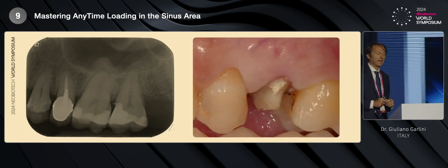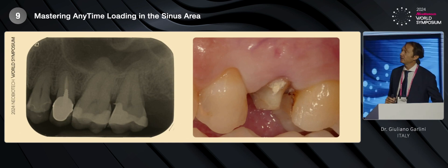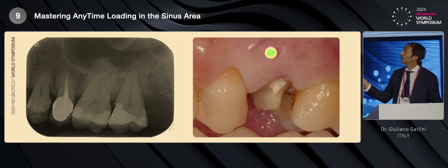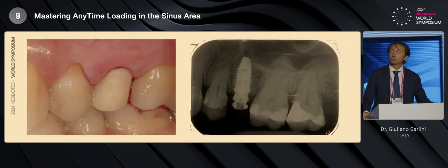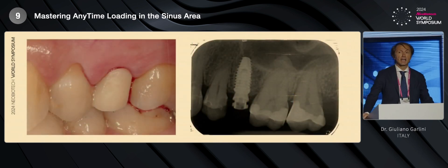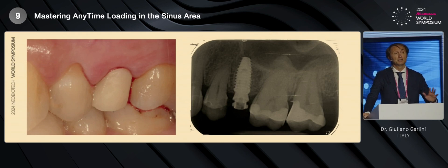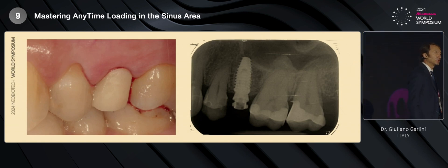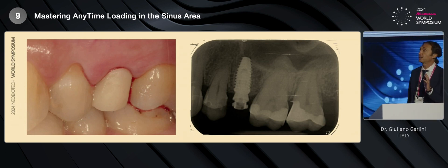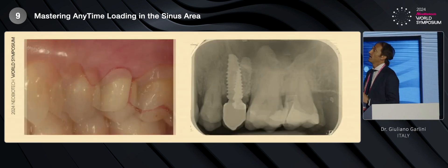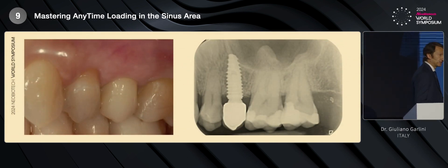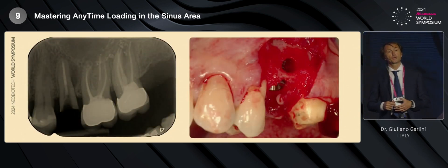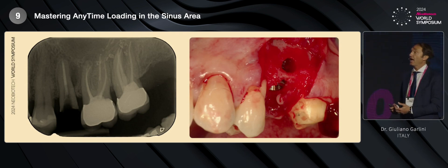So, this was one of the first cases that I did. I needed to replace this second premolar due to a root fracture. There is a fistula also in this area. So I extracted the tooth and inserted the provisional. The provisional has no contact in occlusion, so it's only in function, but the patient is very happy when you do this because he is able to go out from your office with a new tooth. So, after six months, the final restoration. But once you get more confident with this kind of procedure, you will be able to treat more complex cases as this one.